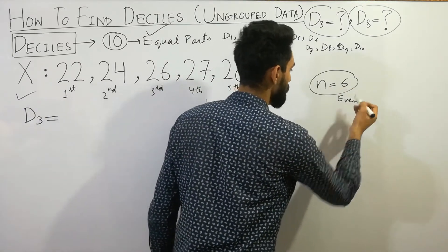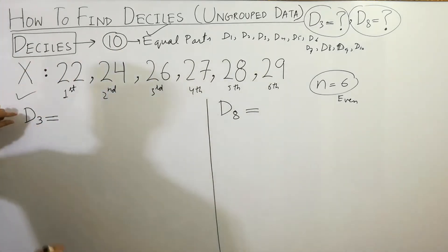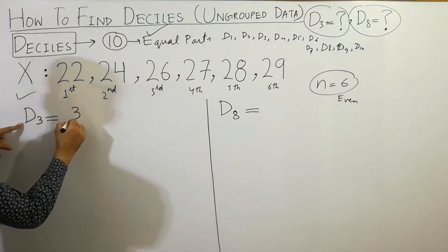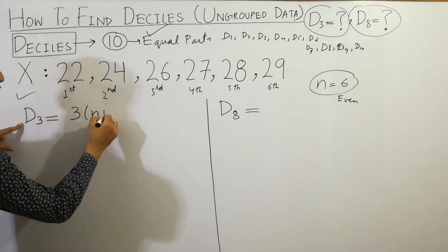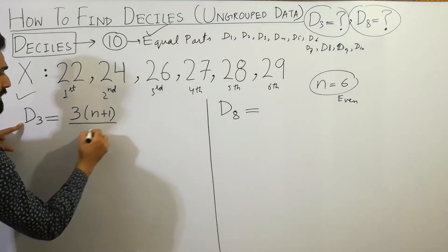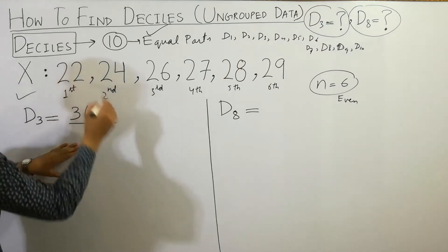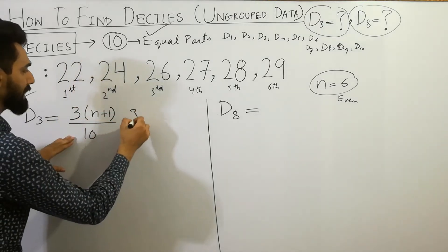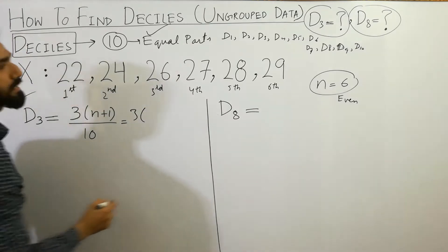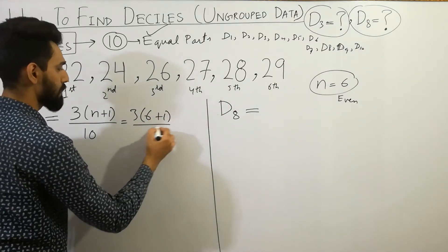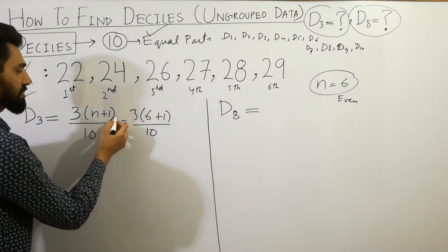First of all, the formula of d3 will be simple: d3 is equal to 3 bracket n plus 1 divided by 10. Ten shows here the decile. So d3 is equal to 3 bracket n value is 6, we put the value here: 6 plus 1 divided by 10. This term is th, which shows their terms.